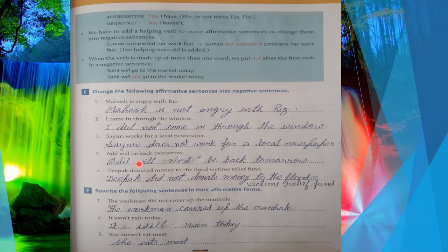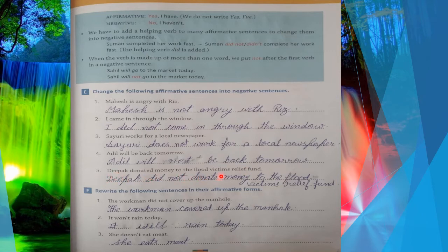Next: 'Adil will be back tomorrow.' Simple sentence — you write: 'Adil will not be back tomorrow.' When there are two verb words (will + be), put 'not' after the first helping verb. Next: 'Deepak donated money to the flood victims relief fund' — simple past, so: 'Deepak did not donate money to the flood victims relief fund.' 'Donated' changes to first form 'donate'.